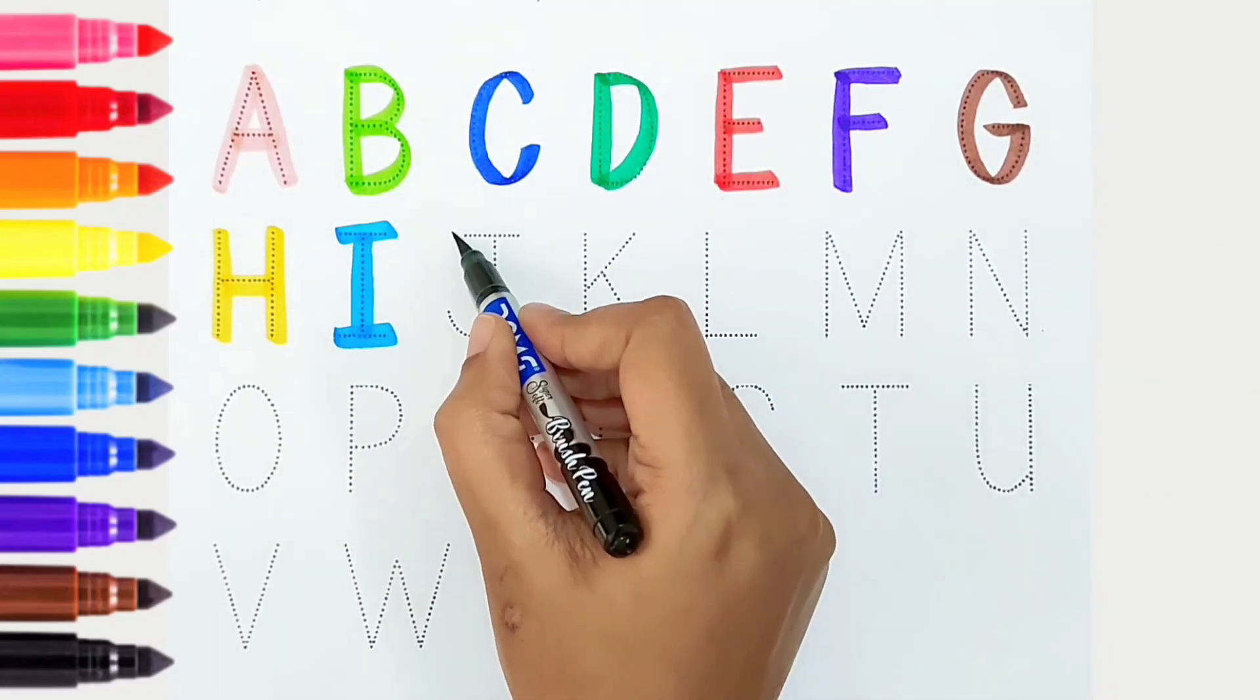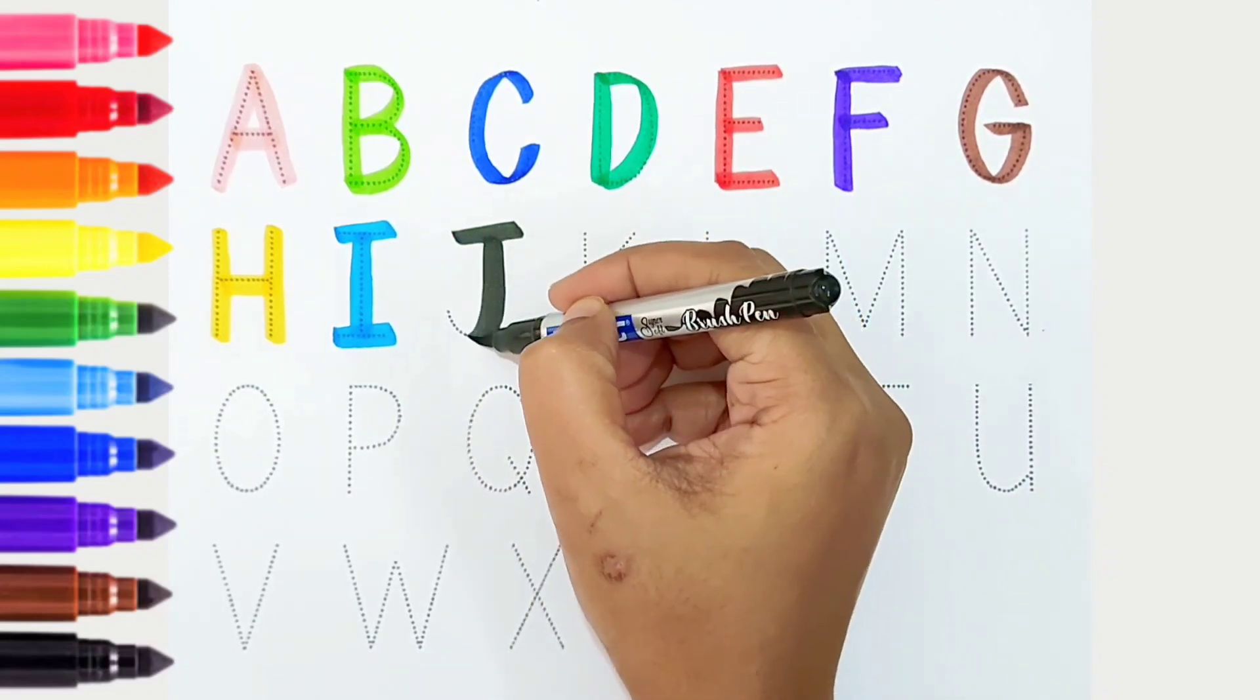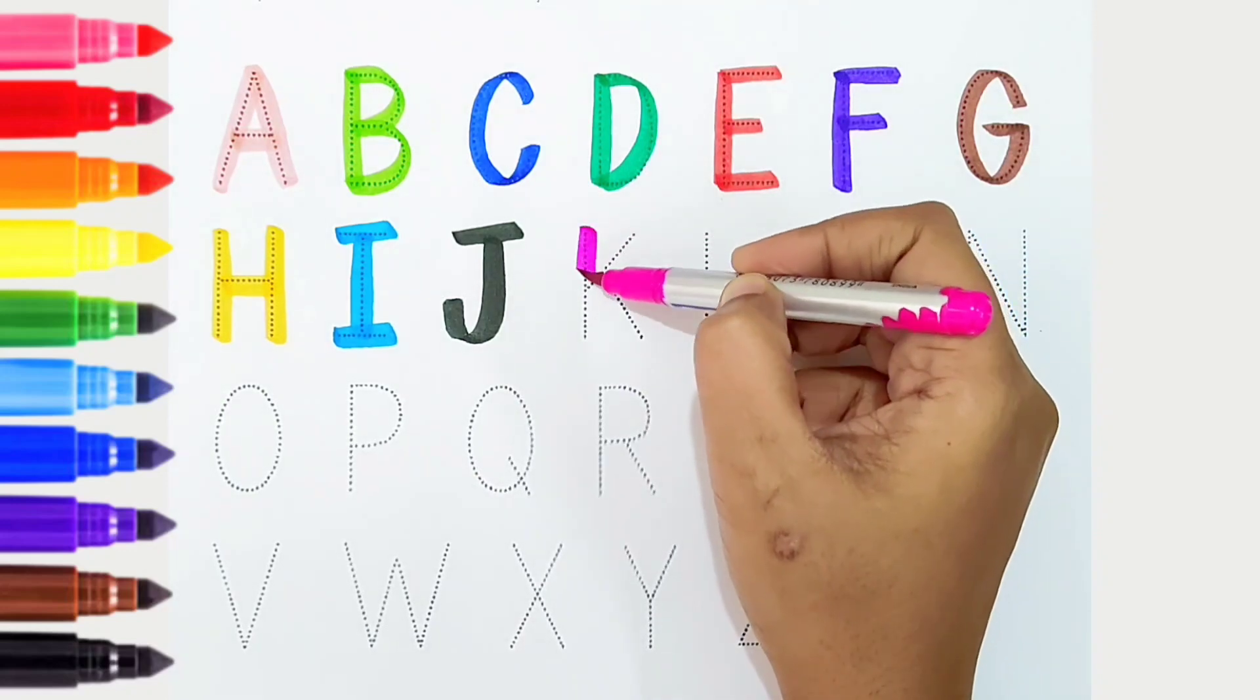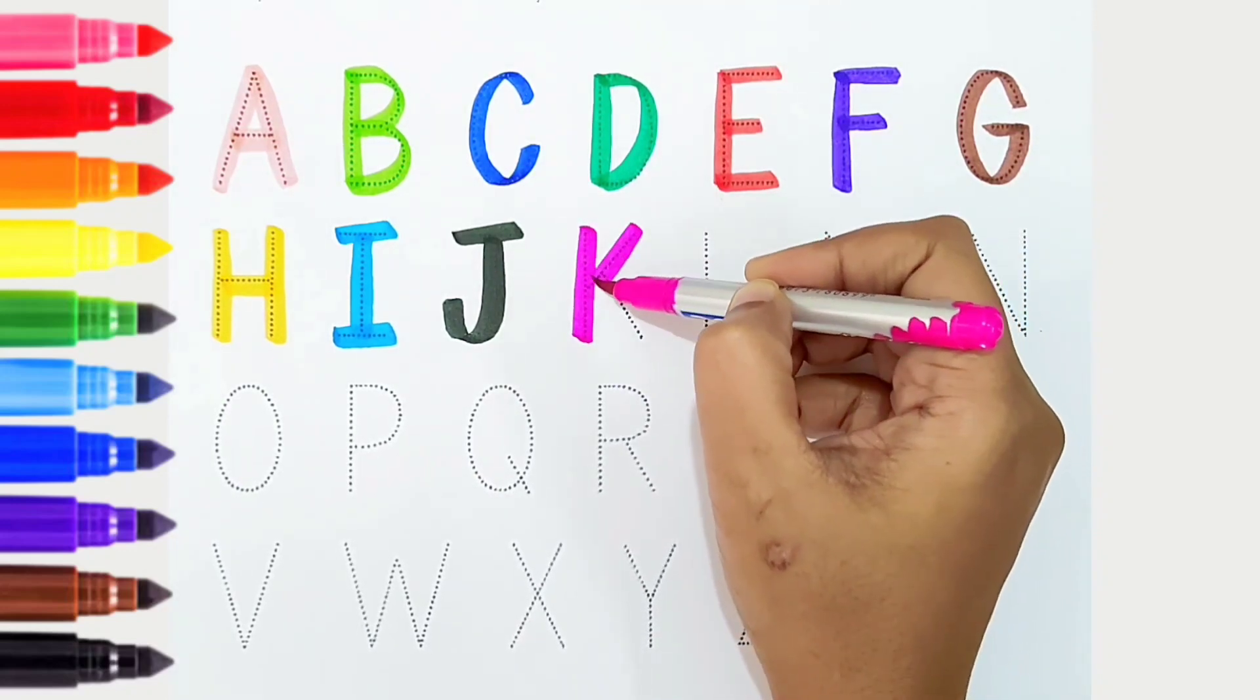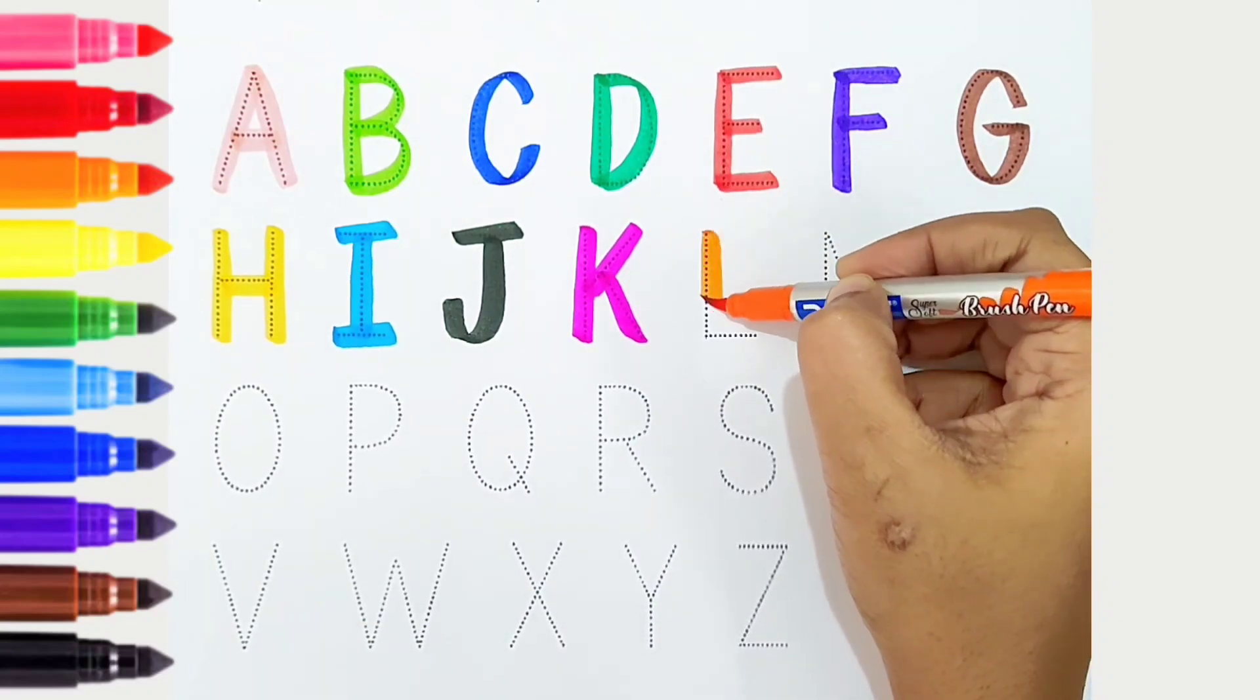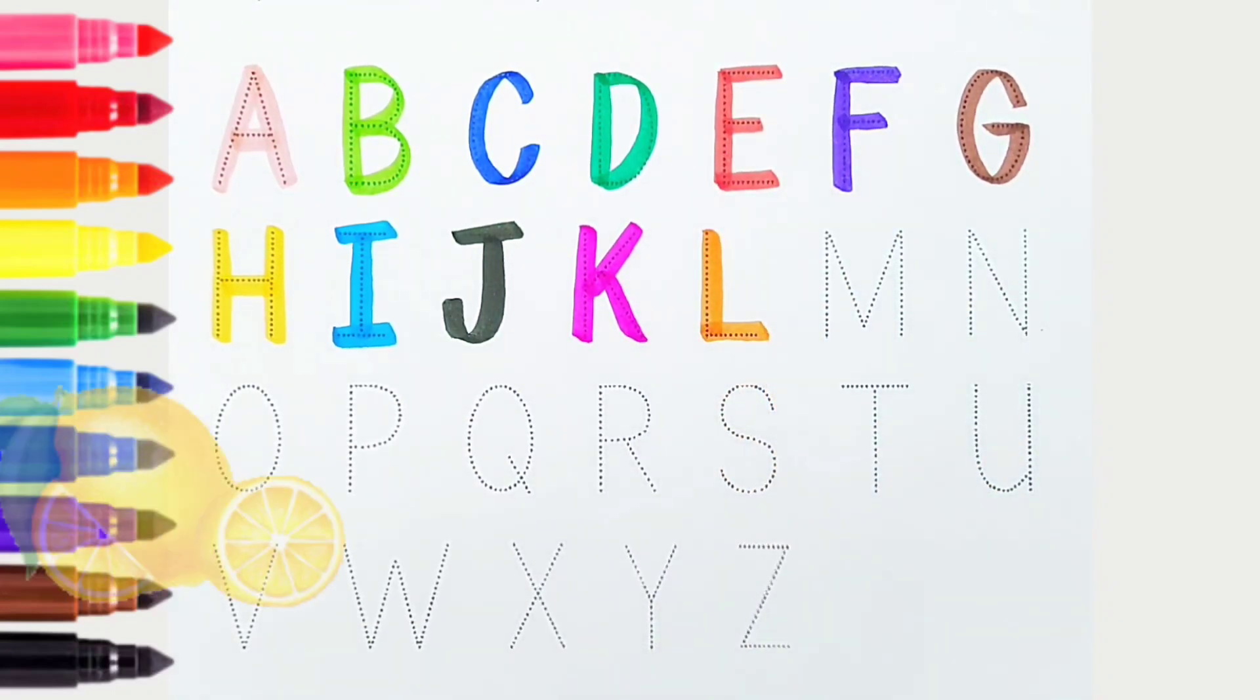J, black color, is for jag. K, dark pink color, is for kangaroo. L, orange color, is for lemon.